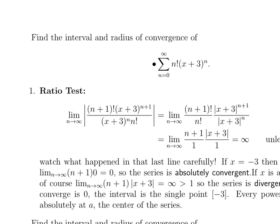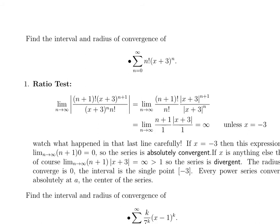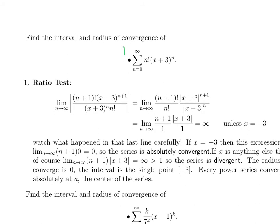In that case we didn't have any endpoints to think about. Here's another case where we don't have to think separately about endpoints. Here the series has an n factorial in it, but now it's in the numerator, so you can see it's going to be hard for this series to converge. And just to make our lives a little more interesting, this time the series is centered at negative 3: x plus 3 equals x minus negative 3, which means our interval is going to be centered at negative 3.